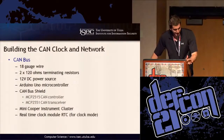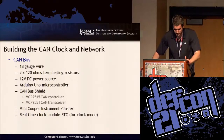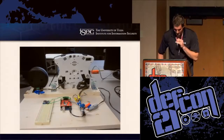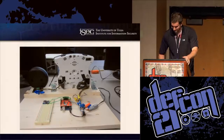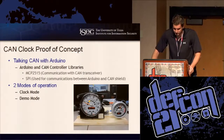Having identified the message IDs responsible for the speedometer and tachometer, as well as the payload and data offsets, we built a simple CAN bus. We used 18-gauge wire, 220-ohm terminating resistors, a 12-volt power source, an Arduino with a CAN bus shield featuring an MCP2515 CAN controller and MCP2551 CAN transceiver, the instrument cluster, and a real-time clock module for the clock functionality. All of this is available on our site with a full step-by-step tutorial, procedure, and source code. We used a CAN controller library designed to communicate with the MCP2515 to construct CAN frames and inject them onto the bus.